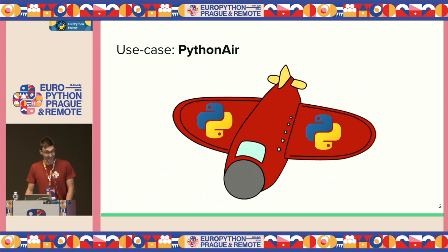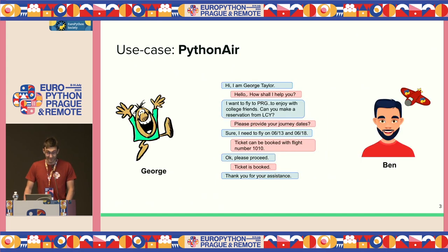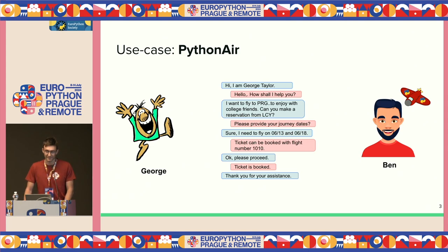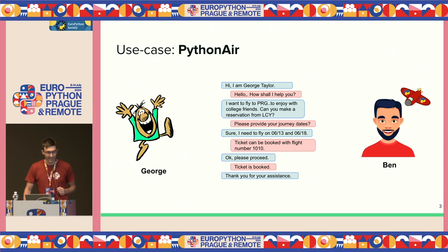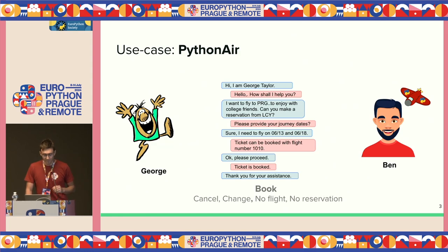Python Air is really cool and customer-centric, so customers like George can reach out and be helped by chat. In this particular conversation, George introduces himself, says he'd like to fly from Prague to London, mentions the journey dates, and in the end the employee of Python Air, Ben, will book a ticket for him.